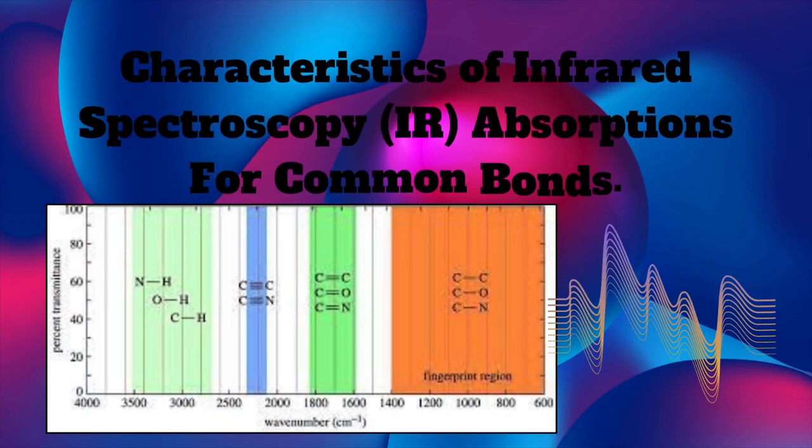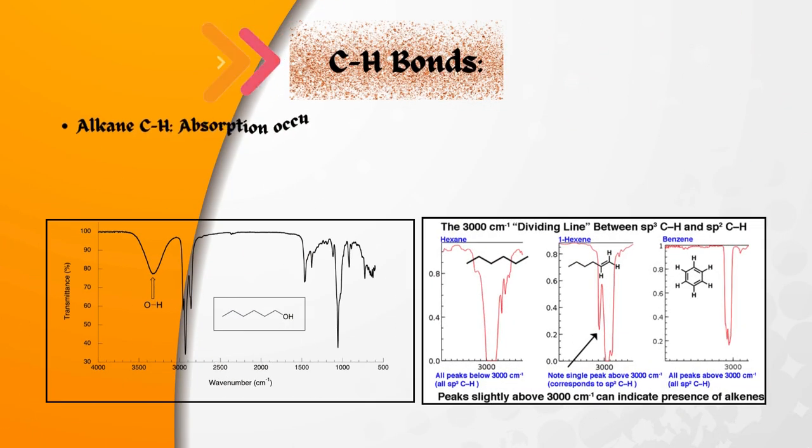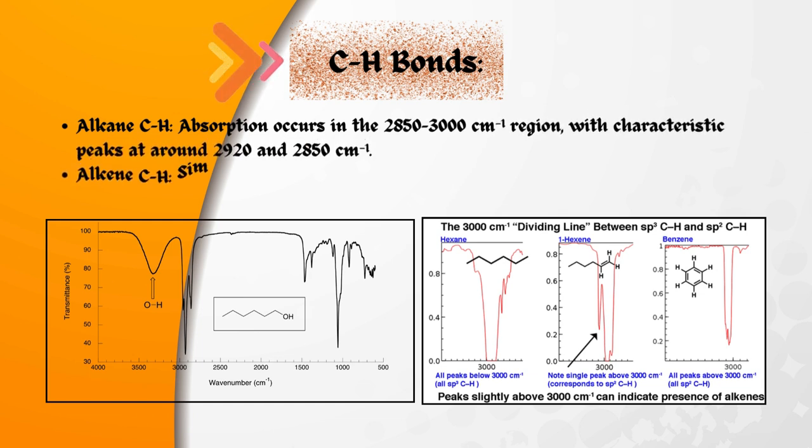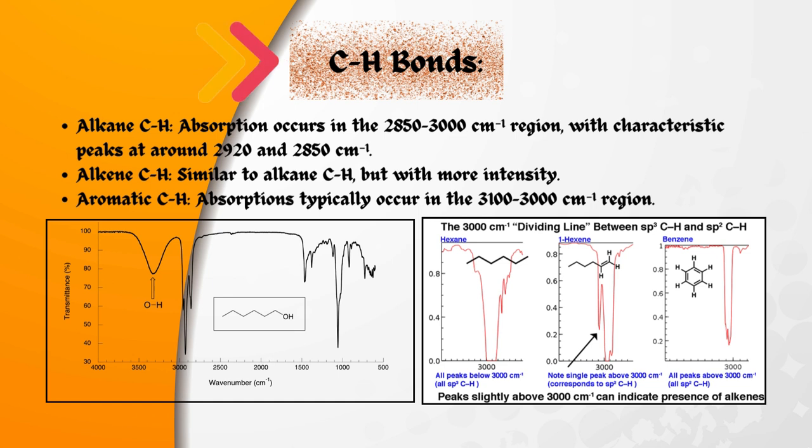Characteristics of infrared spectroscopy IR absorptions for common bonds. Carbon and hydrogen CH bonds. Alkane CH: absorption occurs in the 2,850 to 3,000 per centimeter region, with characteristic peaks at around 2,920 and 2,850 per centimeter. Alkene CH: similar to alkane CH, but with more intensity. Aromatic CH: absorptions typically occur in the 3,100 to 3,000 per centimeter region.